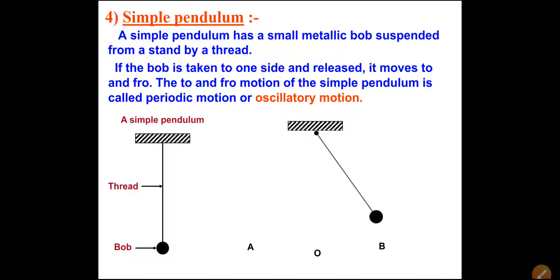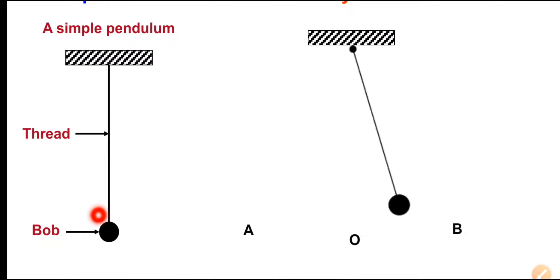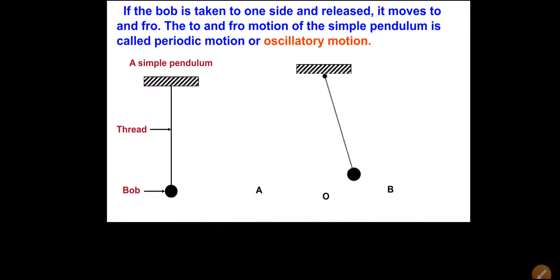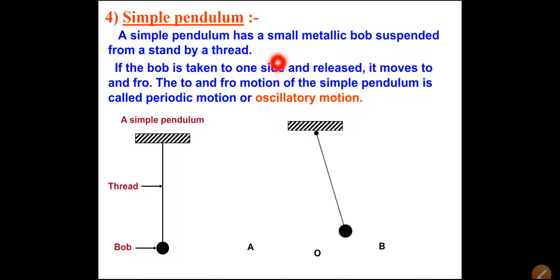Now, what is a simple pendulum? In the diagram of a simple pendulum, the black dot at the bottom is called the bob. The bob is a metallic ball tied with a thread. So the thread connects to the bob, which is a metallic ball. A simple pendulum has a metallic bob suspended from a stand by a thread.